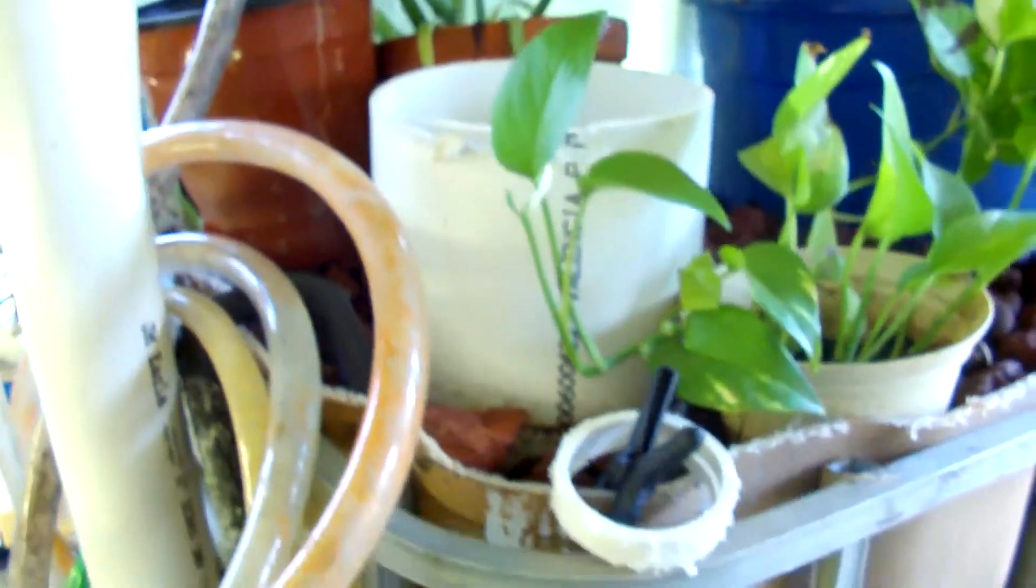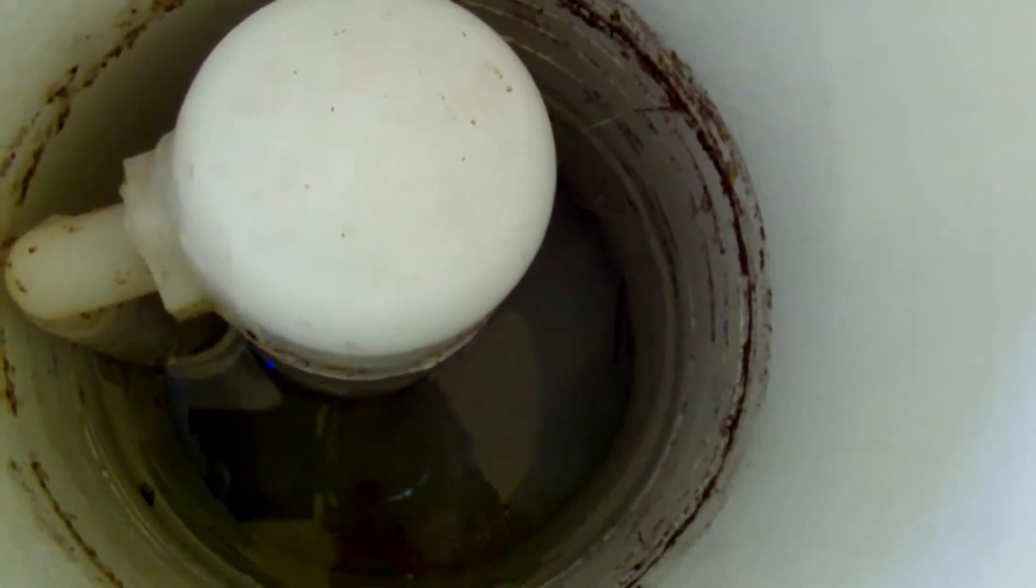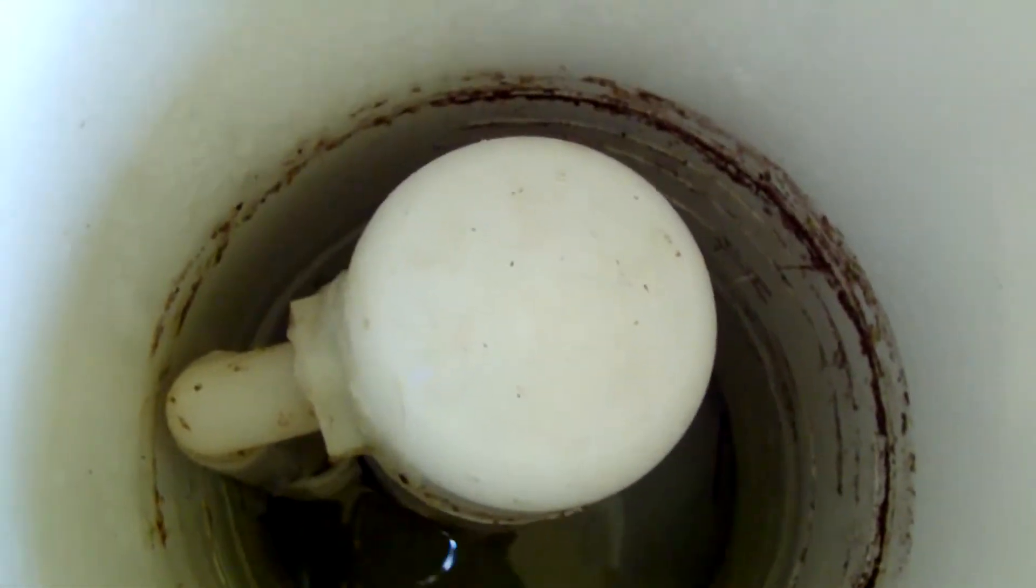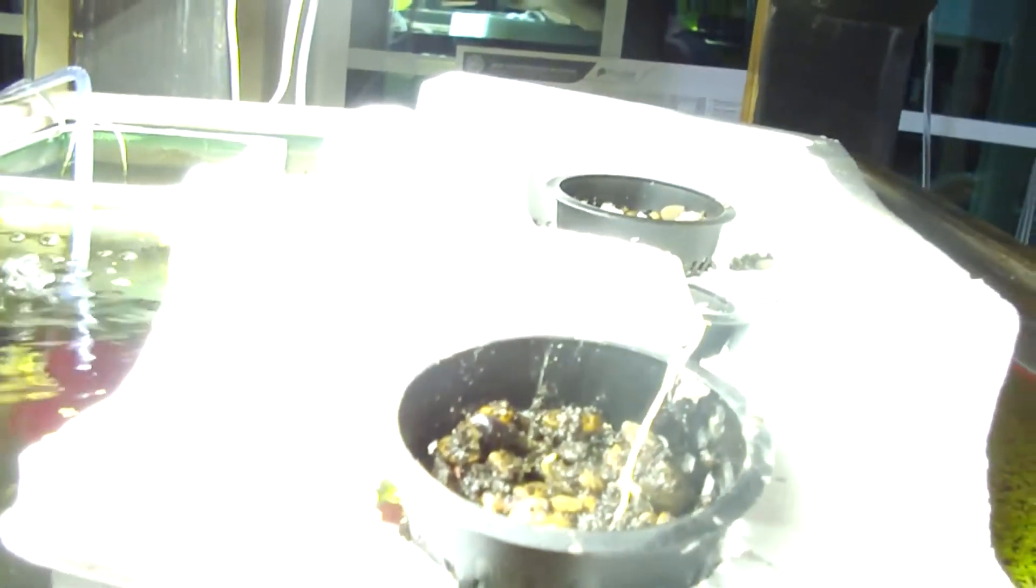On the grow bed. This is the grow bed. I've got pothos ivy. I've got other plants happening. I've got aloe. But here's the bell siphon. So the water level goes up and down in the grow bed. That's inside of that bell siphon. I've also got peace lily in the grow bed. I've got some cucumber. Some other things.